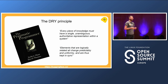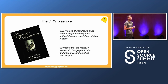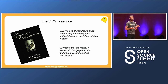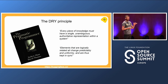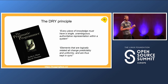Second rule: elements that are logically related all change predictably and uniformly, and are thus kept in sync. What that means is that the abstractions you created do relate to each other, and if you change one abstraction, you should make sure you change the other abstractions in a way that still fits with the overall design of your library.